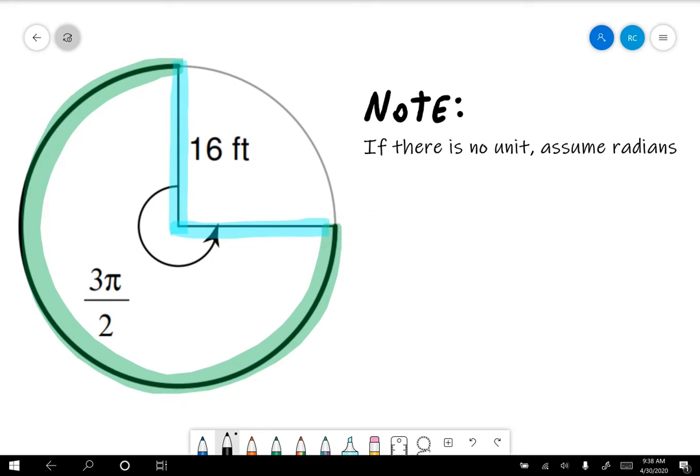Here's something you should probably note down: if there is no unit, you assume that it's radians. That's why I've always asked you to make sure to put the degree mark anytime you mean degrees, because if you don't put any mark at all, it's assumed that you are in radians. So we are 3π/2 radians.